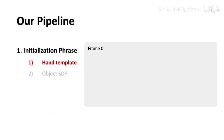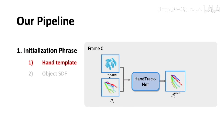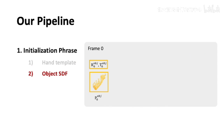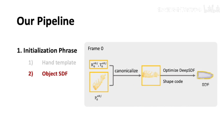Here we provide a walkthrough of our pipeline. Prior to tracking, our system needs an initialization phase at frame 0. To obtain the hand template, we use HandTrackNet to predict the hand pose J0-PRED. Given the pose, we fit a MANO hand template by minimizing the difference between the bone lengths of J0-PRED and those of the template, yielding a hand shape code beta. For the object, we first canonicalize the object point cloud using the initial object pose, then optimize the object shape code of DeepSDF to find an SDF that best fits the canonicalized object point cloud. Note that our method can also update both hand and object shapes during tracking.